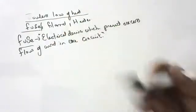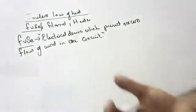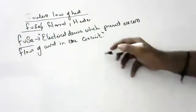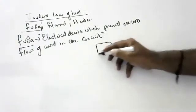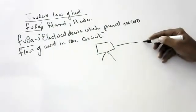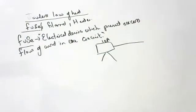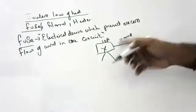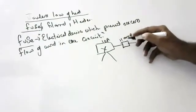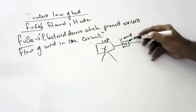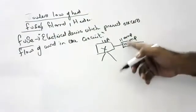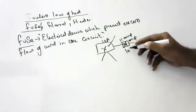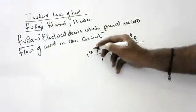Fuse will prevent excess flow of current, which can come accidentally due to voltage fluctuations. For example, imagine your TV — a wire that can hold 10 amperes. If 11 amperes comes accidentally, the TV will spoil. In this case, you put a fuse of 10 amperes. If more than 10 amperes come, the fuse will spoil, not the TV.